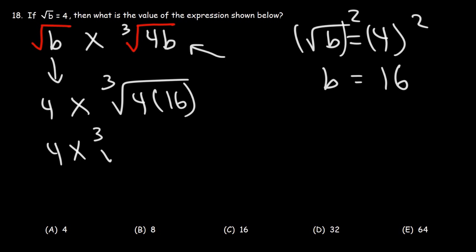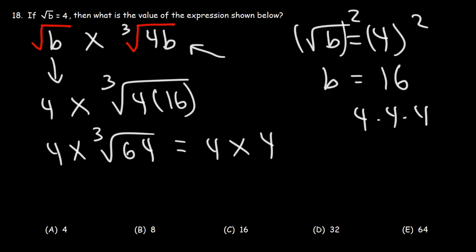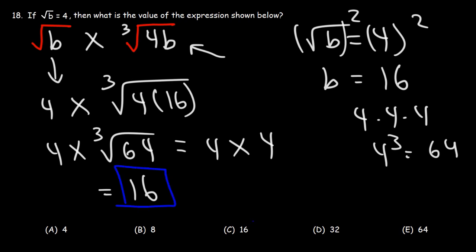4 times 16 is 64. The cube root of 64 is going to be 4, because if you multiply 4 three times you get 64. So the cube root of 64 is 4. Now we're left with 4 times 4 — 4 times 4 is 16. So the answer is 16, which corresponds to answer choice C.